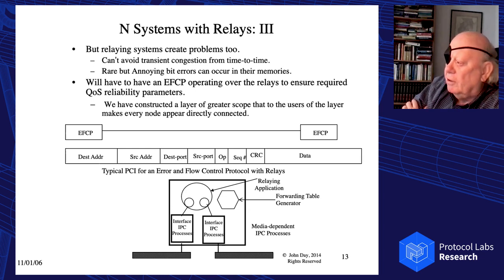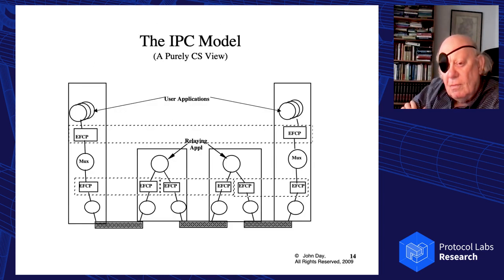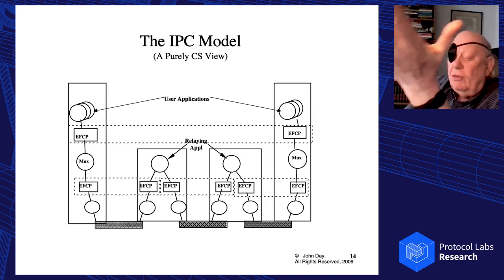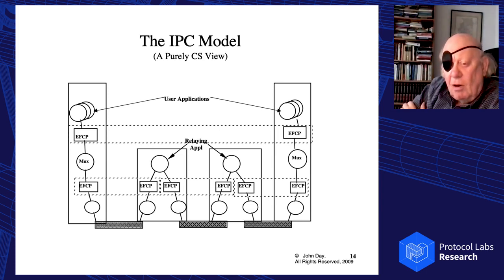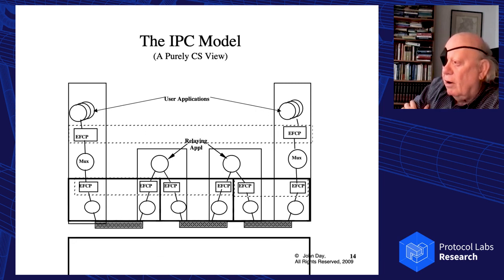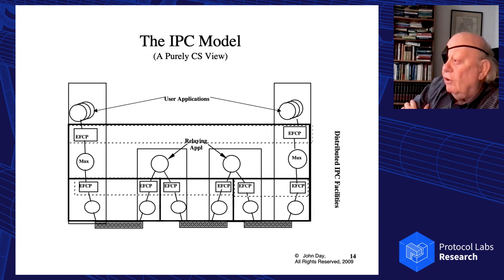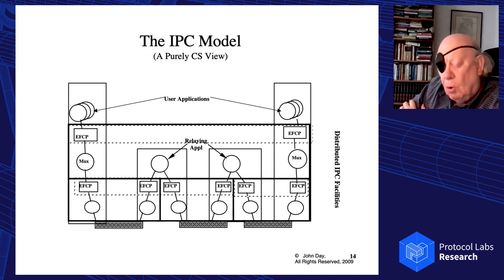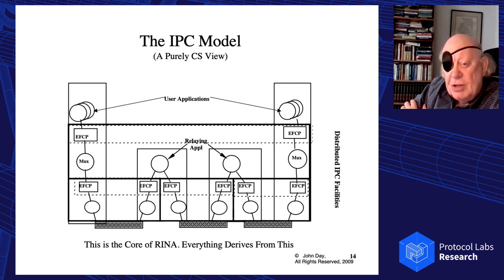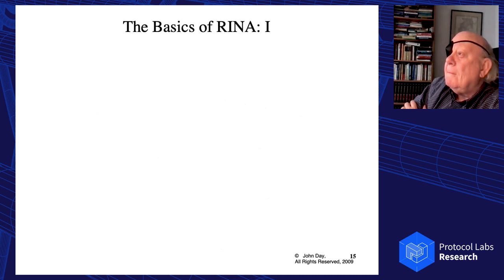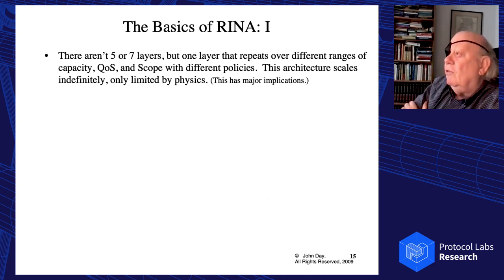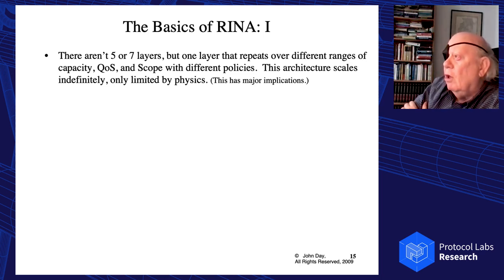If we step back and look at what we've constructed, you're going to say: "John, you just wasted 15 minutes because that's the same old model we already had." Well, no, it isn't. What I just described was that there aren't five or seven layers. There's one kind of layer and it repeats. This is the core of RINA. Everything derives from that.